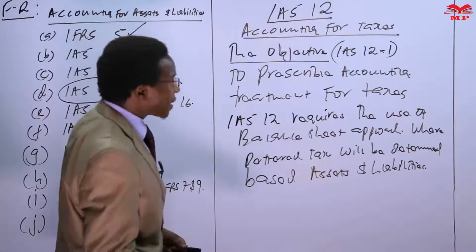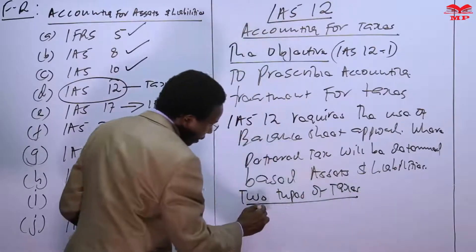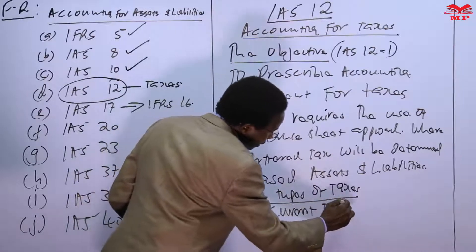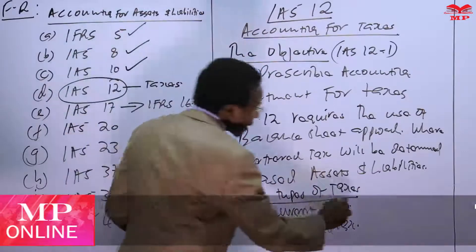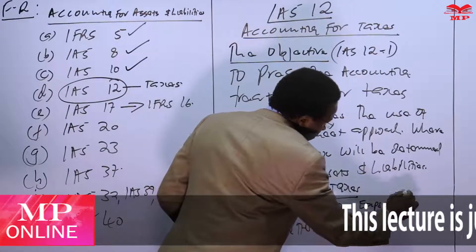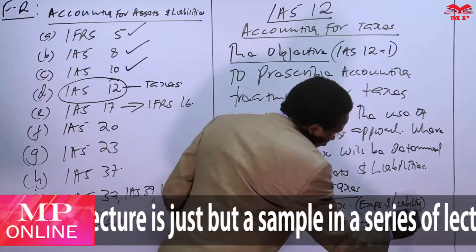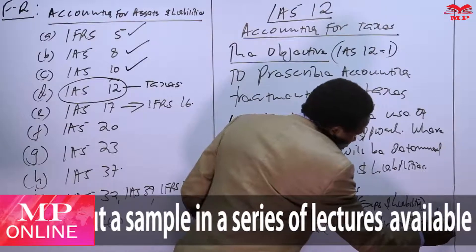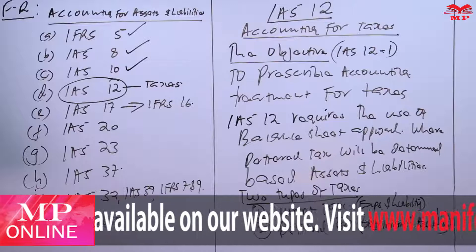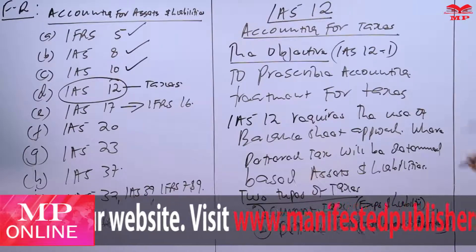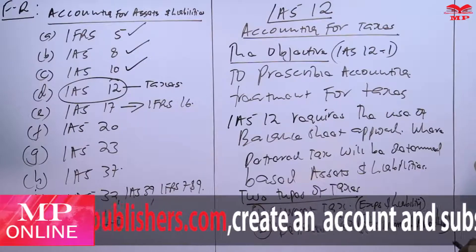There are two types of taxes we will be talking about. One, there is the current tax. And two, there is the deferred tax. We need to look at the current tax expense and liability. We also need to look at the deferred tax expense or income, and asset or liability. So we want to look at how we recognize the current tax and how we recognize or account for deferred tax. Current tax, in respect to paragraphs 5 to 10, is very straightforward, but the other paragraphs talk mainly about deferred tax.